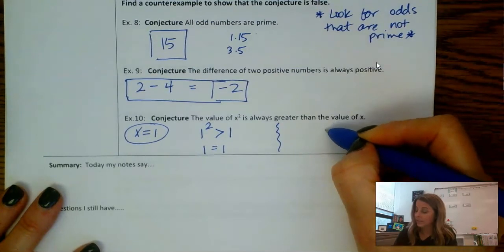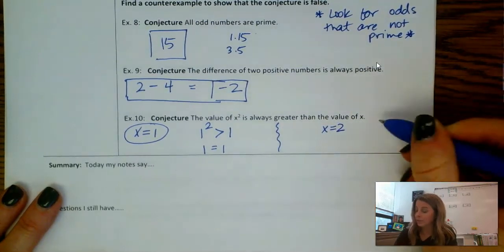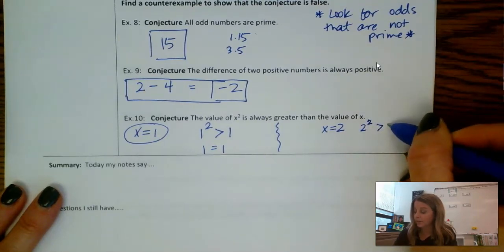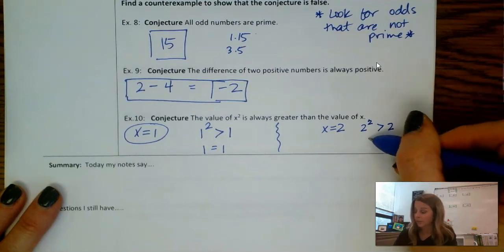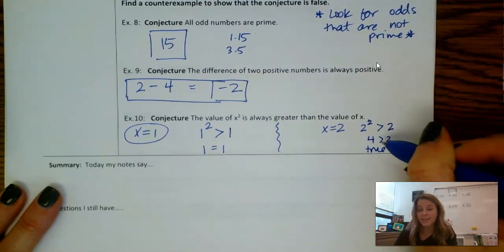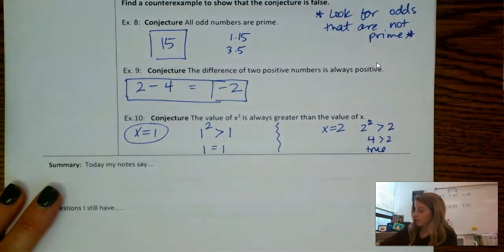Let me give you a few examples that are not counterexamples that prove it true. So let's say x is 2. So the value of x squared, 2 squared, the conjecture is saying it's always greater than the original number. Well, that's 4. 4 is greater than 2. Okay, so that's true. So that's not a counterexample. I'm just going to x through that here.